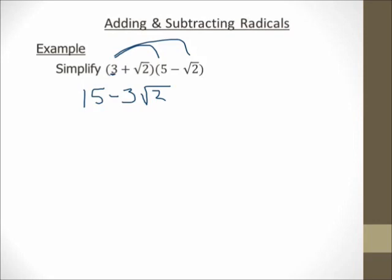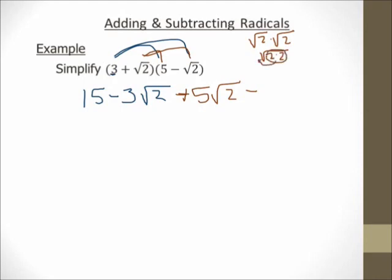Now distribute the square root of 2. Square root of 2 times 5 is 5 square root of 2. Now for the hard part: multiply the radicals together. Positive times negative gives a negative. Square root of 2 times square root of 2 — I break them into primes, put them under the same radical, circle my pairs, bring one out — and I end up with 2. So square root of 2 times square root of 2 is just 2. That pattern holds all the time: square root of n times square root of n equals n.